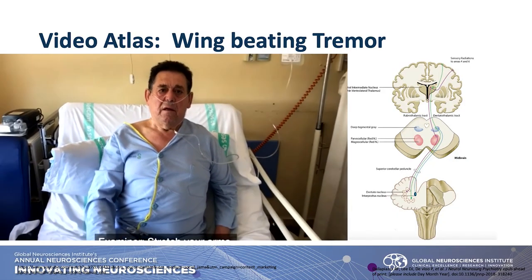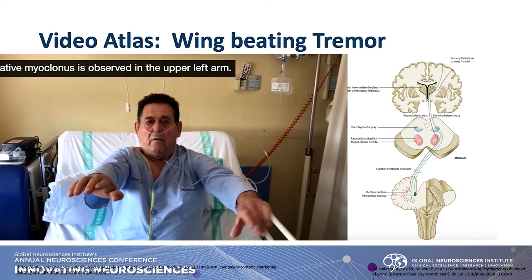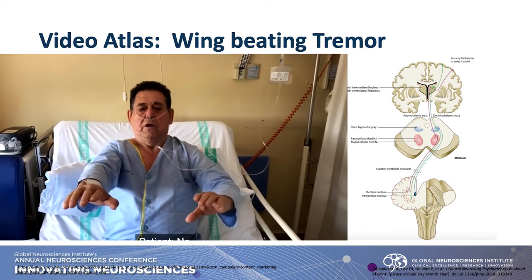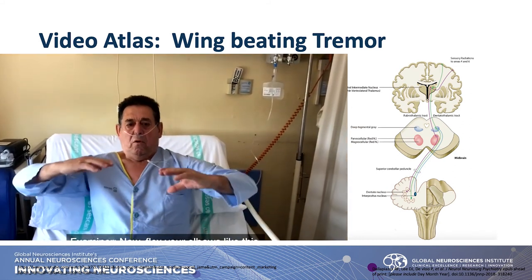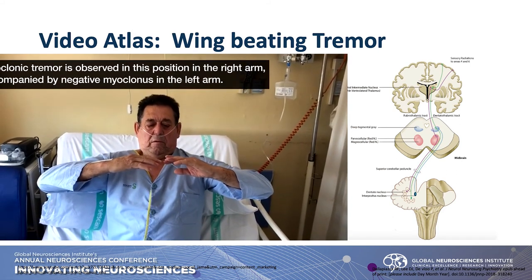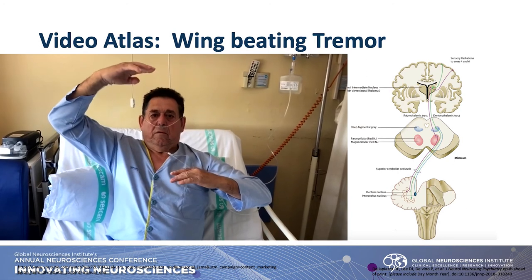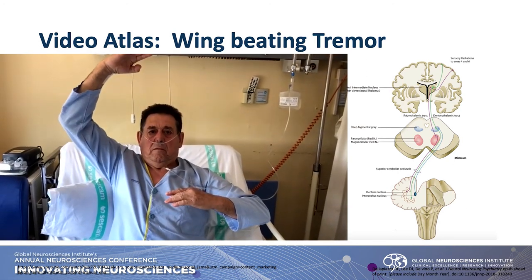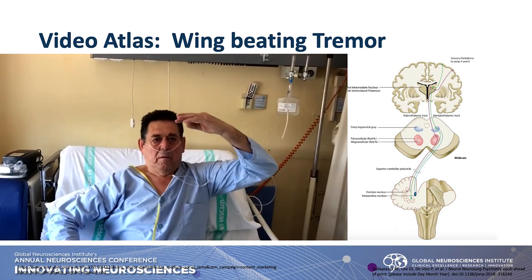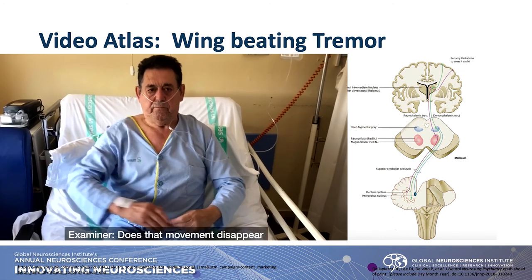This is a wing-beating tremor — shown just to illustrate what it looks like. It's not pathologic of any particular condition; it's anything that disrupts the dentatorubrothalamic pathway. In this case, this gentleman had CJD, but it can be seen in MS, stroke, or any structural abnormality. It's a very large amplitude tremor. When you see it — there it is — you can't miss it. It's indicative of localization, not necessarily of the pathology.